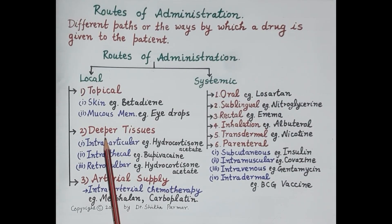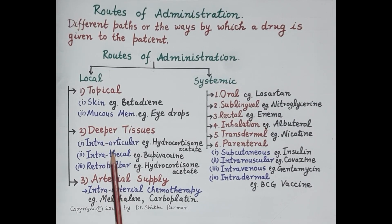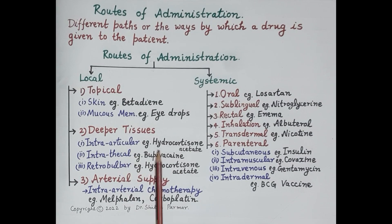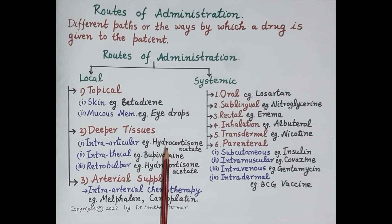The second type of local route involves injection of drugs in deeper tissues for local action. In the intra-articular route, the drug is injected into the articular cartilage, which covers the joints. For example, hydrocortisone acetate, an anti-inflammatory drug, is injected into the knee joint for the treatment of rheumatoid arthritis — that is a local action of the drug.